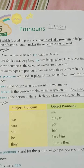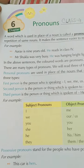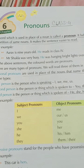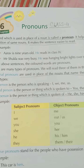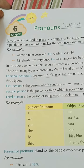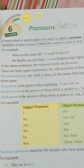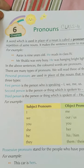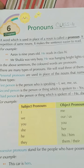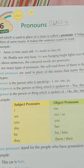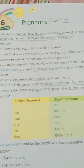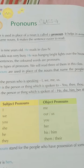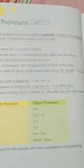Personal pronouns are used in place of nouns that name people. They are of three types. First person is the person who is speaking — I, me, we, us. Second person is the person or thing which is spoken to — you. Third person is the person or thing which is spoken of — he, she, him, her, they, them, and it.